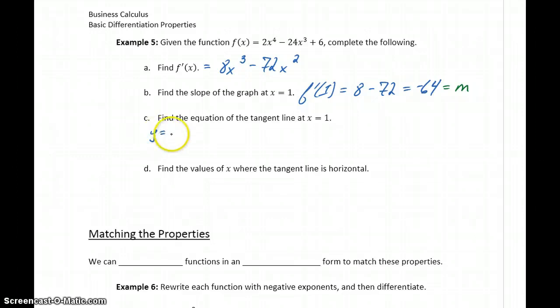So what we know already is the slope, so we know that y equals negative 64x plus some intercept b. So then what we can do is plug in values for x and y. At the point we're considering, x equals 1.